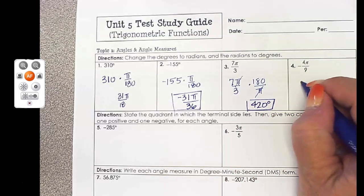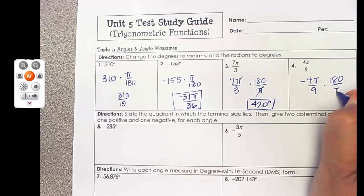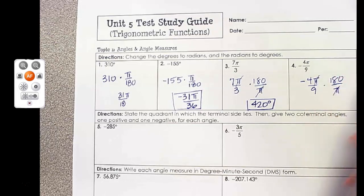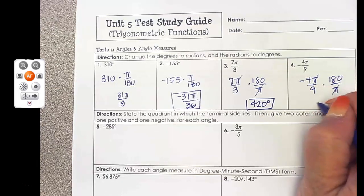So 7/3 times 180 is 420 degrees. And do the same thing for a negative angle. Multiply by 180 over π. The π's cancel. Negative 4/9 times 180, that's going to be negative 80 degrees.